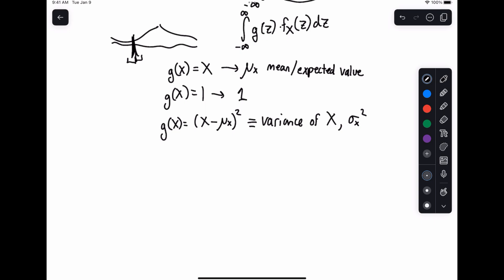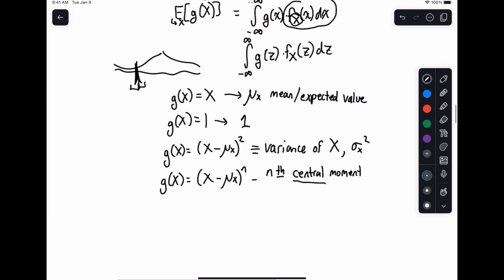Then we're going to have g of x equals x minus mu sub x to the power n. And what this is called is the nth central moment. The central part is because we're subtracting the mean here, just like in the variance. It's just, rather than raising it to the second power, we can raise it to some arbitrary power.